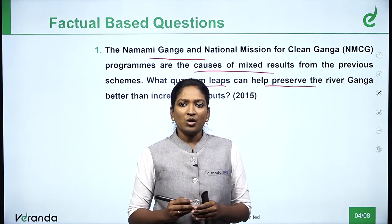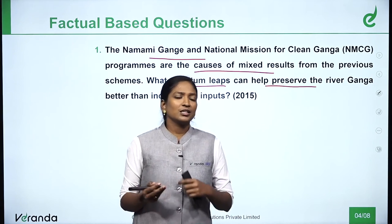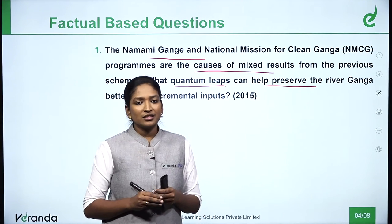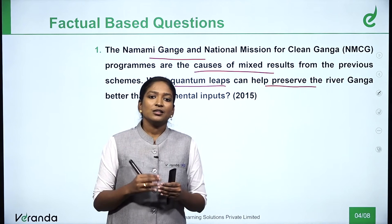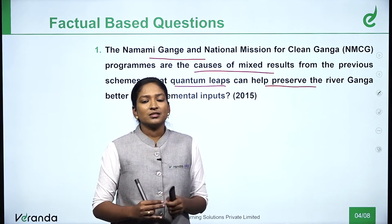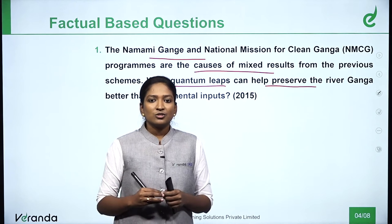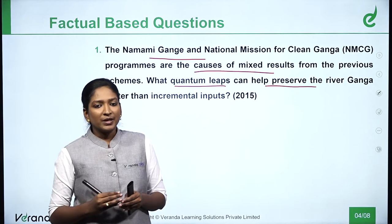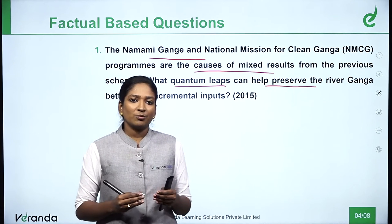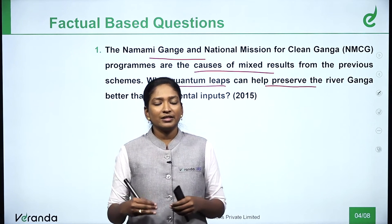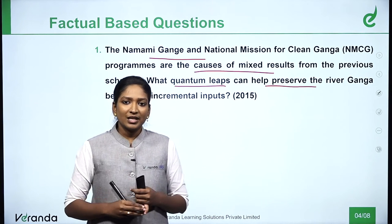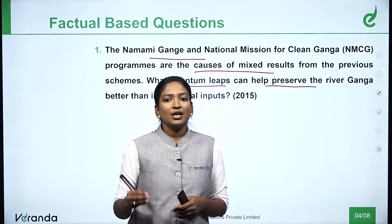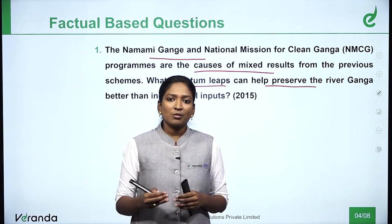The question also asks about better incremental inputs for river Ganga. Pollution is caused mainly by open defecation in and around the Ganga area, and local festivals also contribute to the pollution. On the government side, reasons for continuous delays include contract delays, re-contract delays, slow processes, and issues related to the public process and local festivals.